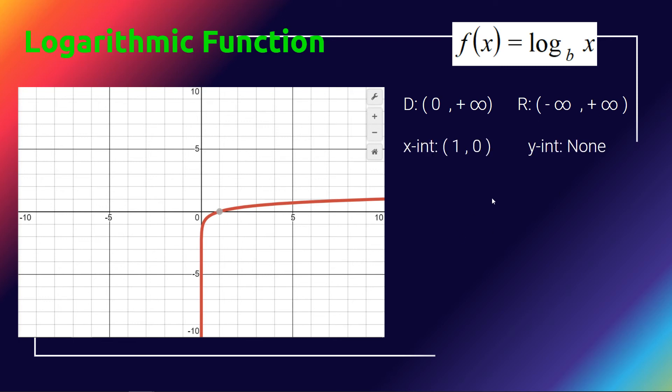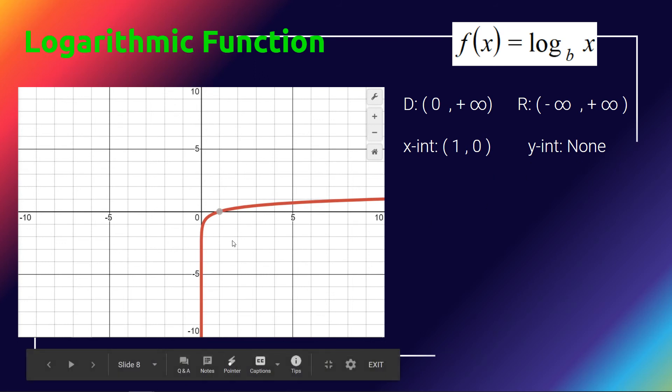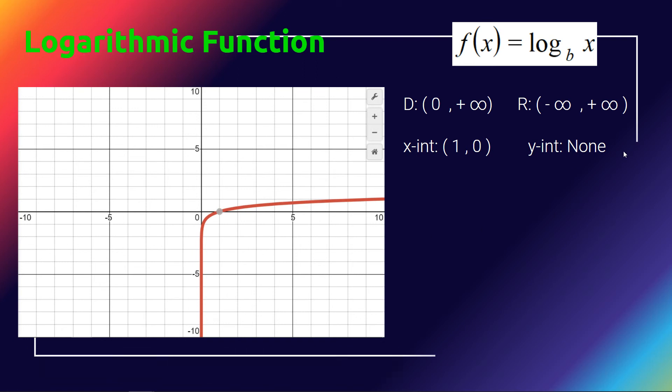All the other attributes basically flip as well, including the x-intercept, which is now that special point (1, 0), where before on the exponential it was (0, 1). So now they've flipped. There is never going to be a y-intercept for the parent function. If it's moved left or right, then that would change—you could get a y-intercept.